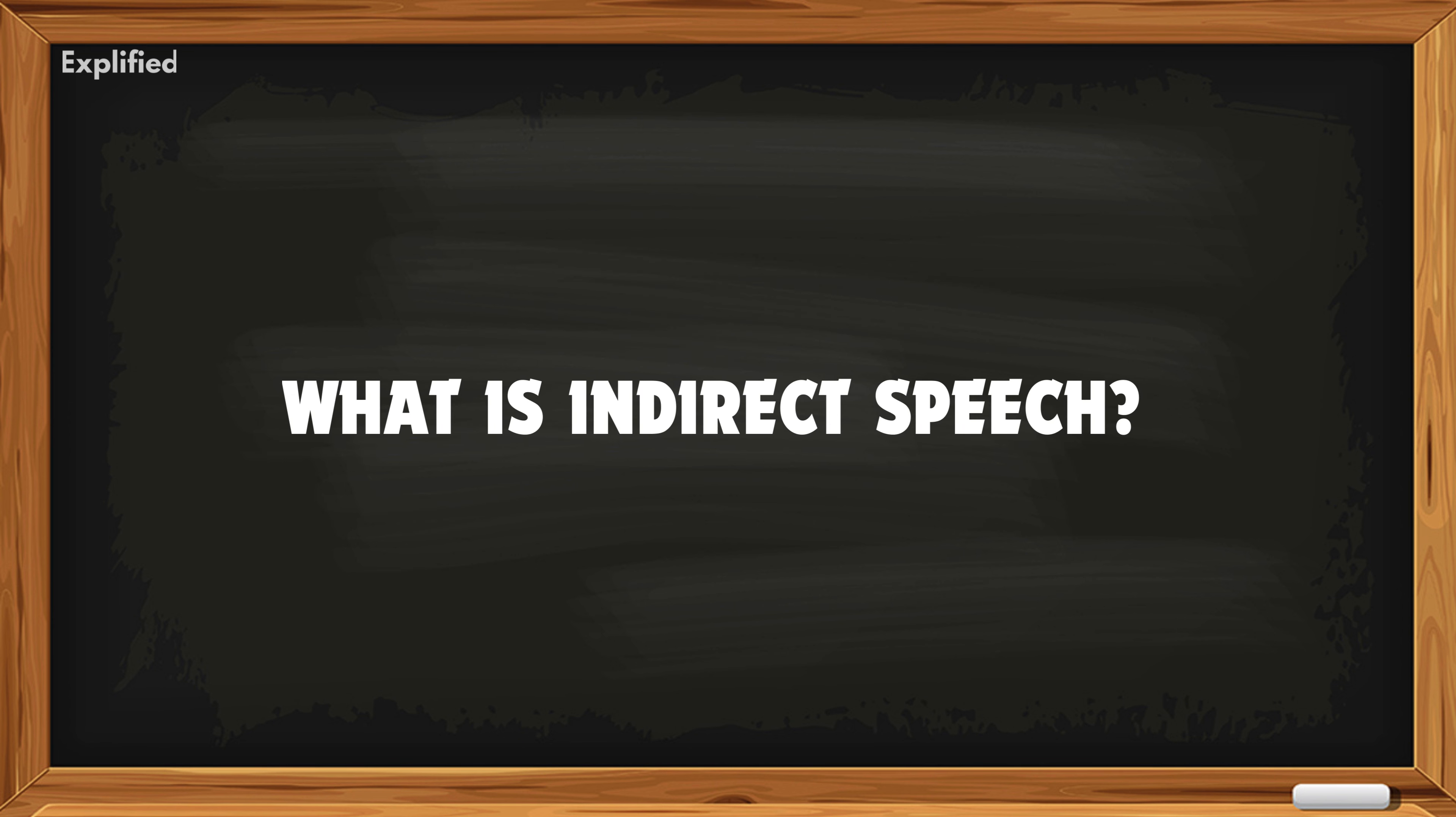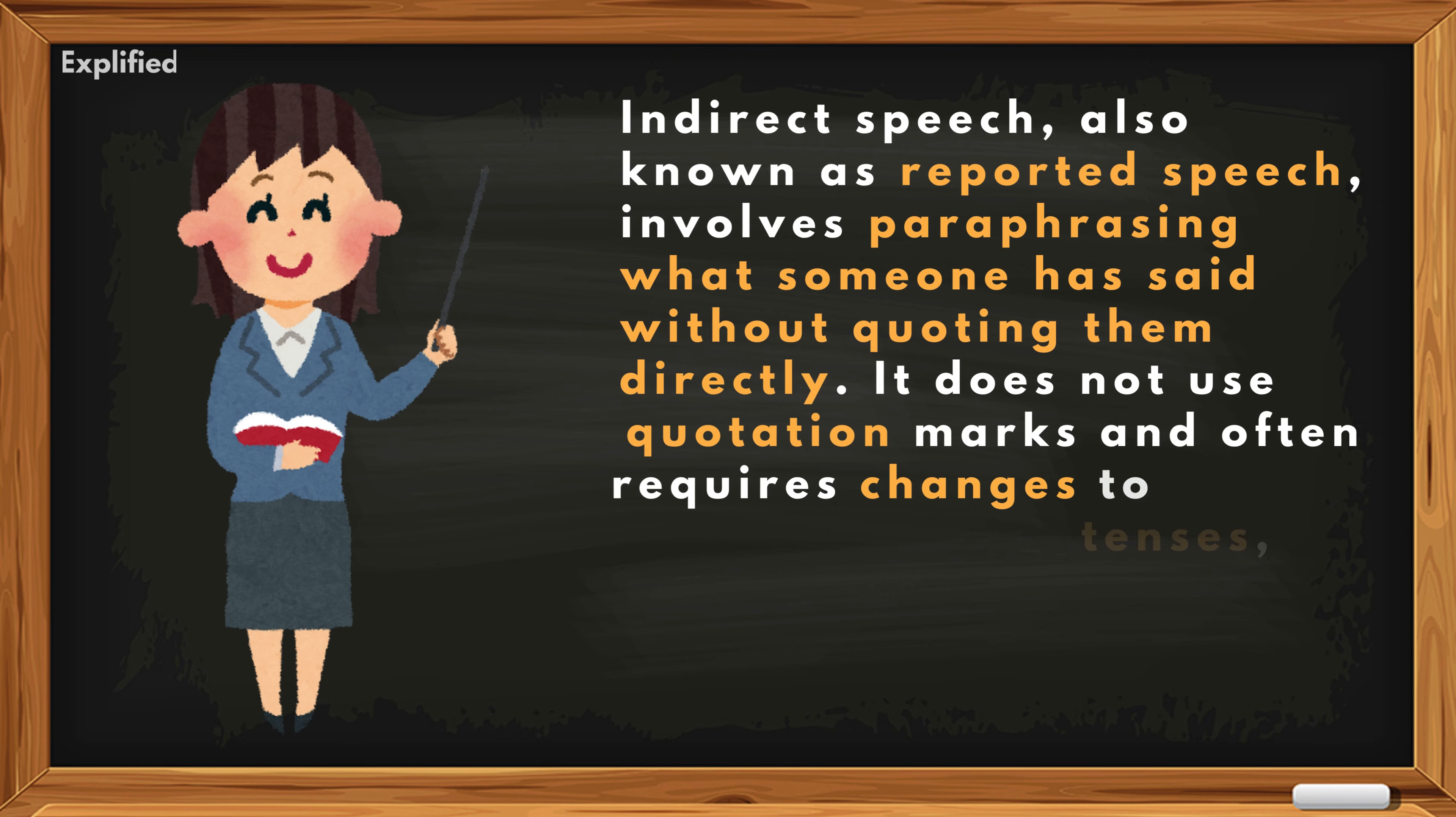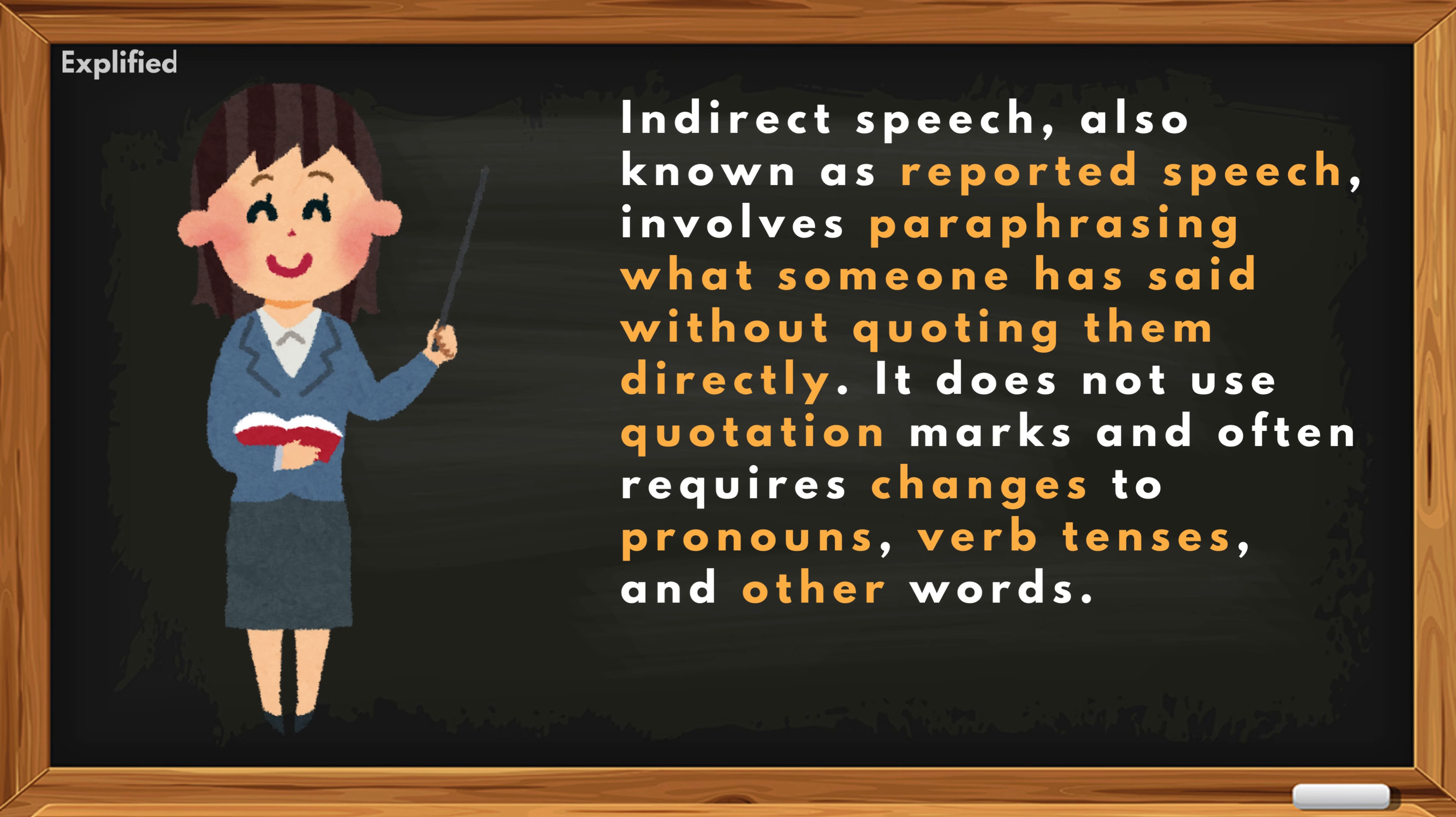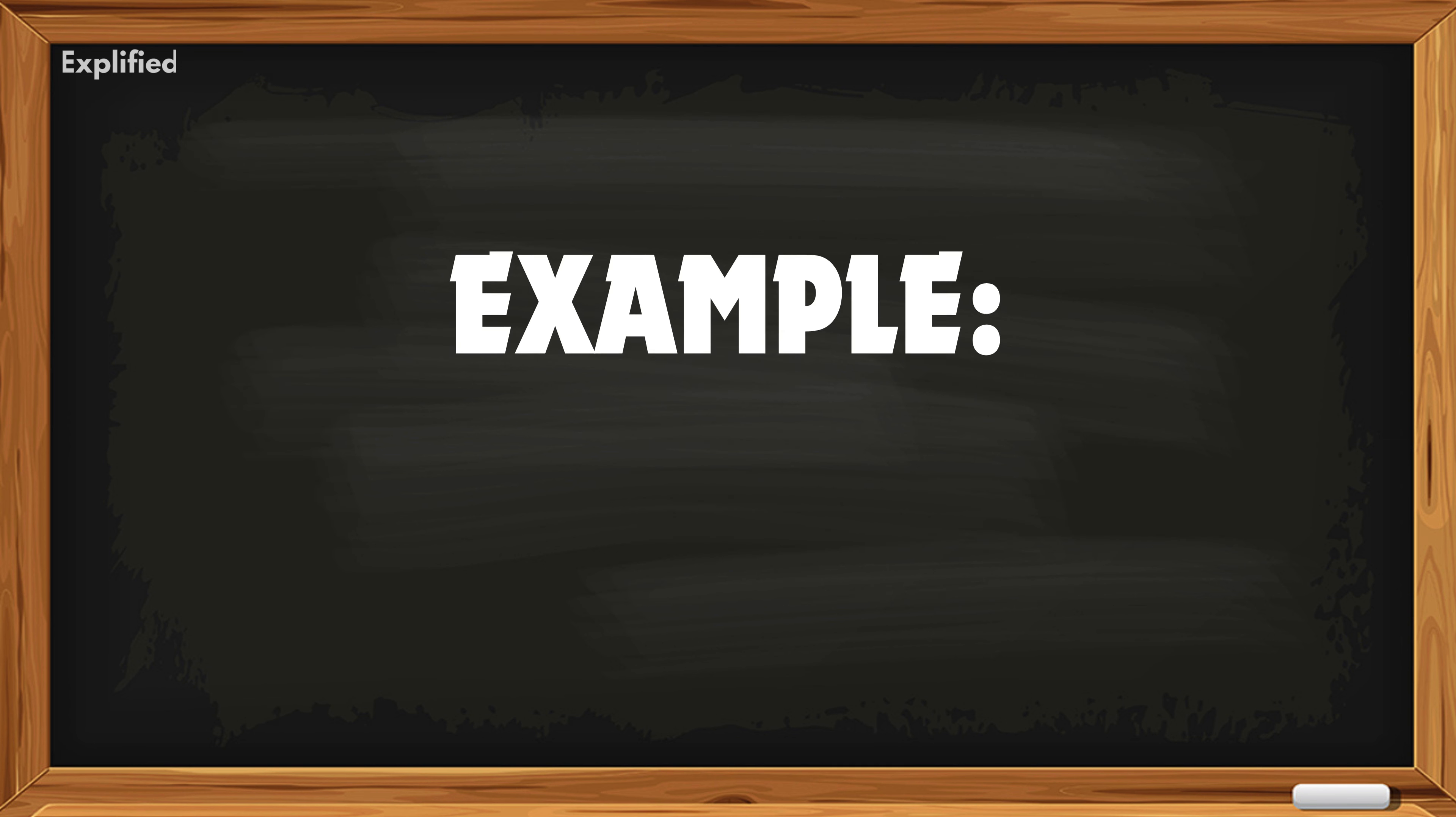What is indirect speech? Indirect speech, also known as reported speech, involves paraphrasing what someone has said without quoting them directly. It does not use quotation marks and often requires changes to pronouns, verb tenses, and other words. Example: John said that he was going to the store.